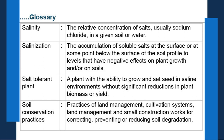Salinity — the relative concentration of salts, usually sodium chloride, in a given soil or water. Salinization — the accumulation of soluble salts at the surface or below the surface of the soil profile to levels that have negative effects on plant growth or soil. Salinization can occur in surface soils or in the subsurface. Salt tolerant plant — a plant with the ability to grow and set seed in a saline environment without significant reductions in plant biomass or yield. Soil conservation practices — practices of land management, cultivation systems, and small construction works for correcting, preventing or reducing soil degradation.